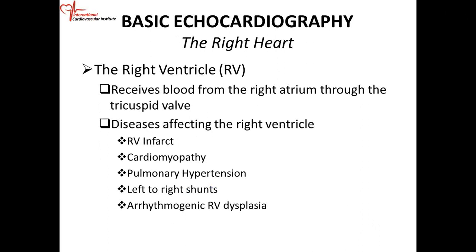Remember that the right ventricle receives blood from the right atrium through the tricuspid valve. The diseases that affect the right ventricle include right ventricular infarct. When there is an obstruction to the blood vessel supplying the right ventricle — usually the right coronary artery — if you have obstruction to the right coronary artery and the heart muscle dies, you get a right ventricular infarct.